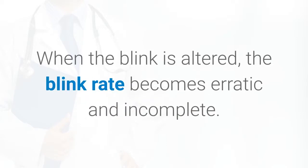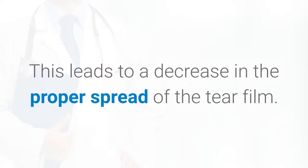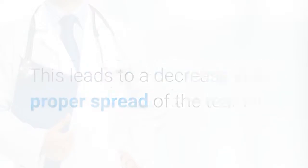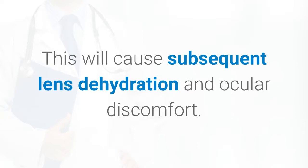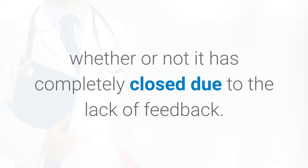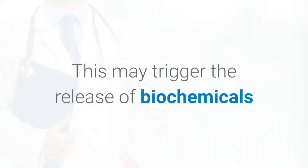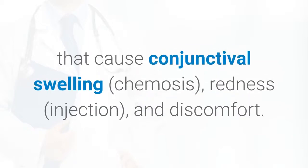When the blink is altered, the blink rate becomes erratic and incomplete. This leads to a decrease in the proper spread of the tear film, causing subsequent lens dehydration and ocular discomfort. A contact lens also acts as a barrier to sensation, contributing to an incomplete blink. Essentially, the lid does not know whether or not it has completely closed due to the lack of feedback. Incomplete lid closure leads to superficial corneal and conjunctival staining, which may trigger the release of biochemicals that cause conjunctival swelling, chemosis, redness, injection, and discomfort.